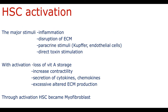Hepatic stellate cell activation is the key step in fibrogenesis. The major stimuli for activation are: inflammation causing permanent oxidant stress, and hepatic stellate cells become activated to limit the inflammation area by scar tissue production. Also, disruption of extracellular matrix space can stimulate hepatic stellate cell activation, because if the extracellular matrix space is damaged, hepatic stellate cells become activated to secrete additional extracellular matrix to repair the damaged area, as scar tissue works like biological glue to keep tissue unity. Hepatic stellate cells can also be activated by paracrine stimulation — for example, Kupffer cells after antigen stimulation — or by direct toxin stimulation such as acetaminophen intoxication.